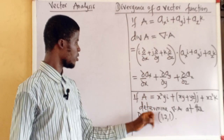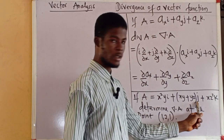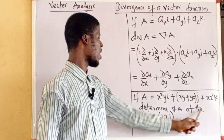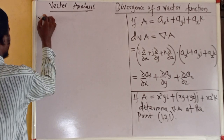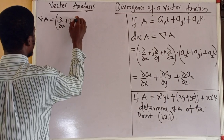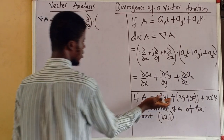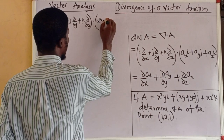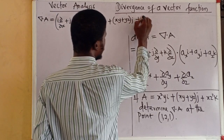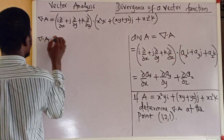Now look at this question. If A is equal to x²y·i plus (xy + yz)·j plus xz²·k, we are to determine the divergence of A at a given point. The divergence of A is: i·(∂/∂x) plus j·(∂/∂y) plus k·(∂/∂z), dotted with the vector A which is x²y·i plus (xy + yz)·j plus xz²·k.